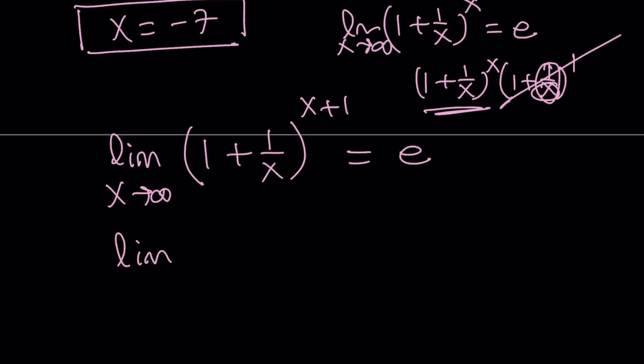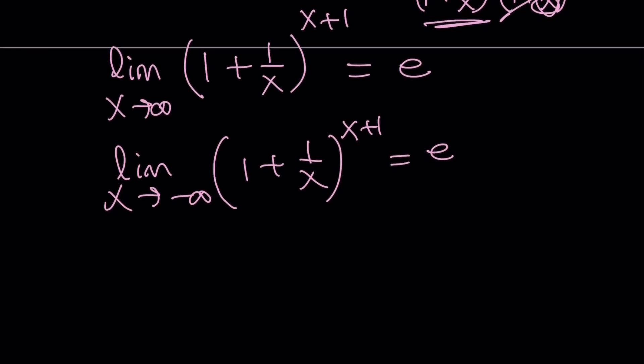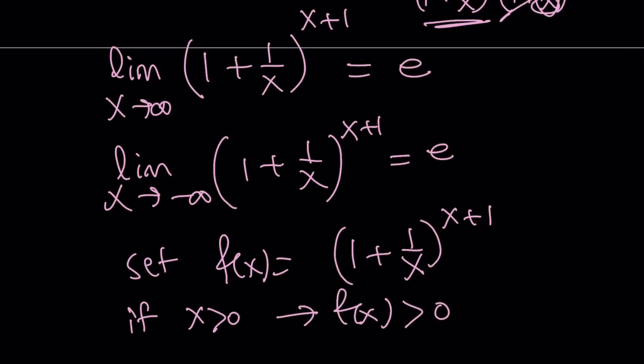What about as x approaches negative infinity? That's going to be the same. Okay? It doesn't matter. And you can easily show that. That's not too hard to do. But now, what happens if we set f of x equal to this function? 1 plus 1 over x to the power x plus 1. Now, if x is positive, you're going to realize something interesting here. Then f of x is also going to be positive. Now, what happens if x is negative? Well, here's the thing. If x is negative, and obviously, think about it like negative 1 million, the base is going to approach 1. So it's going to get smaller. So here's the thing. I want to show you the graph. I can't wait.